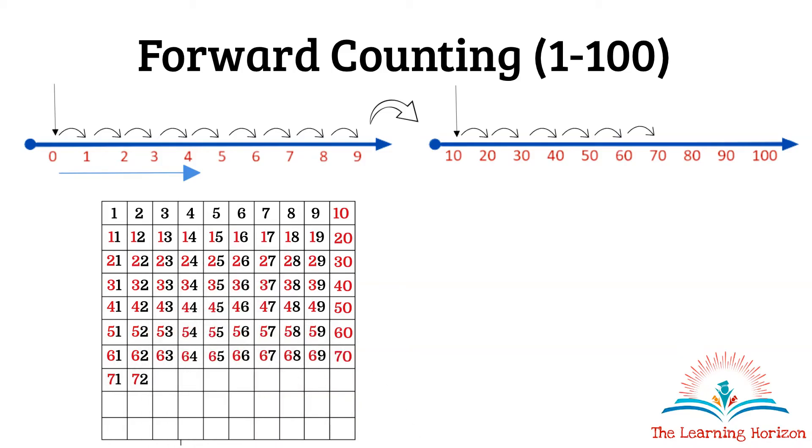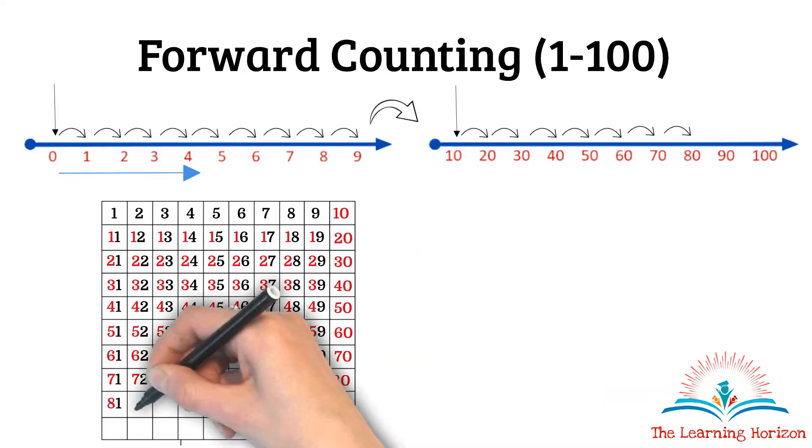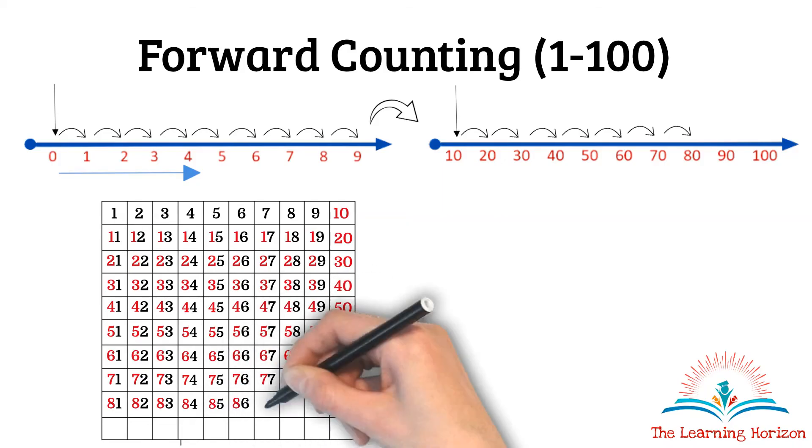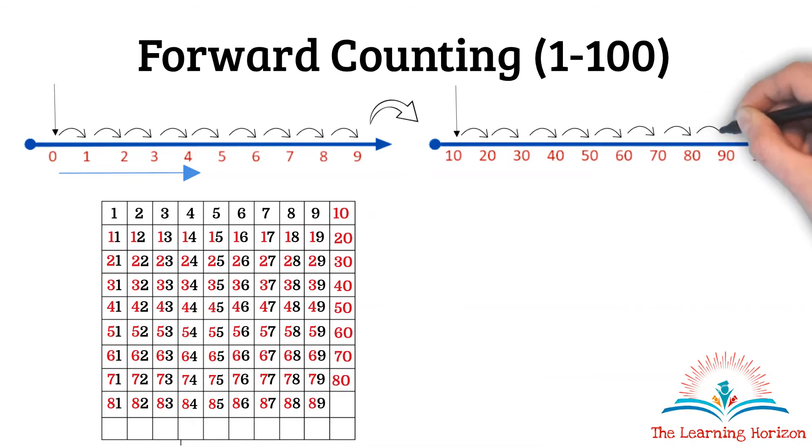71, 72, 73, 74, 75, 76, 77, 78, 79. Move on to the next tens that is 80. 81, 82, 83, 84, 85, 86, 87, 88, 89. Move on to the next tens that is 90.